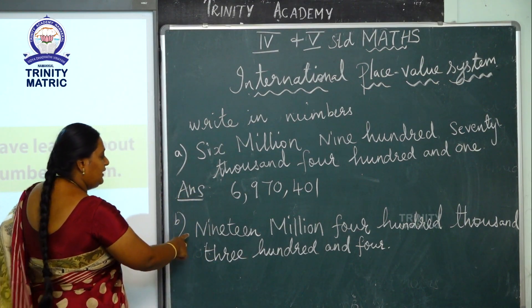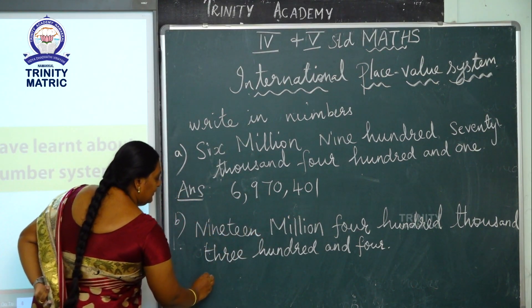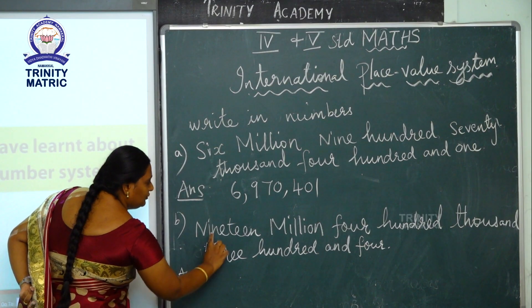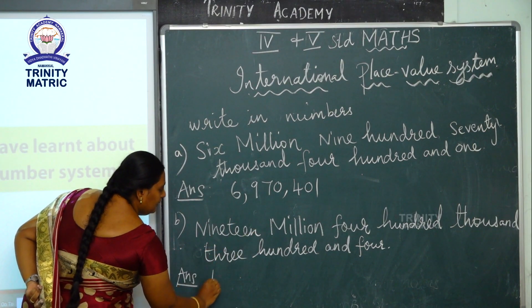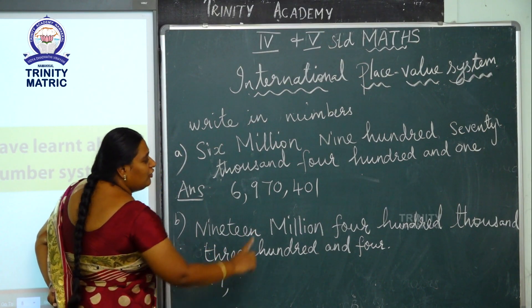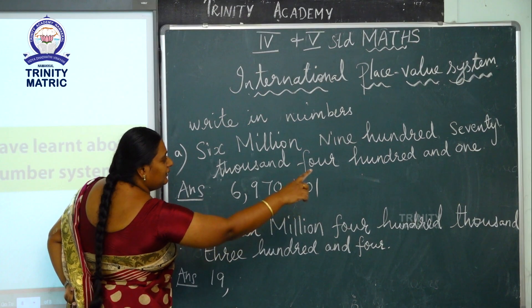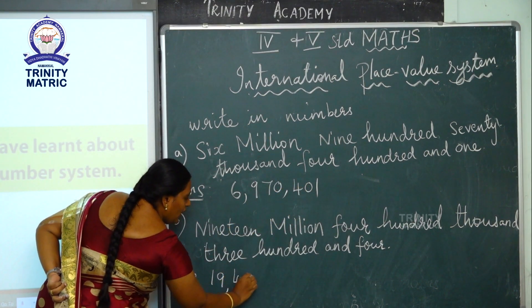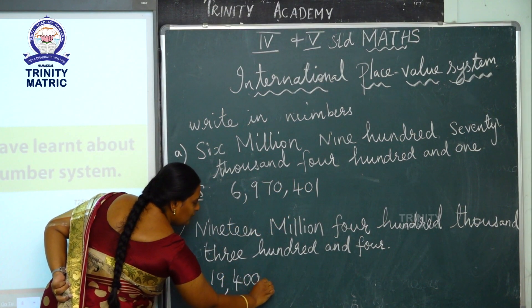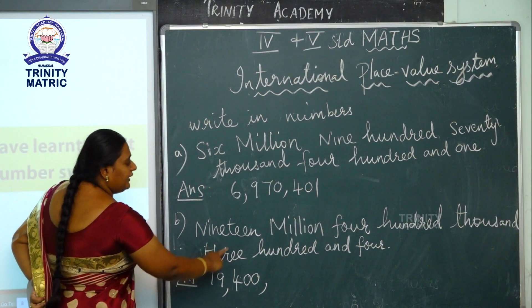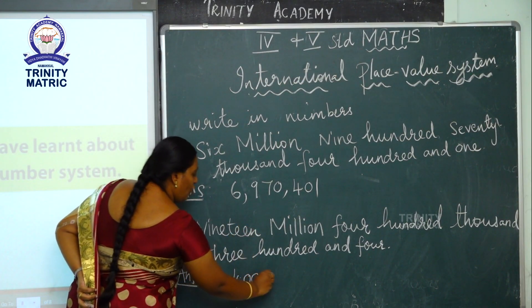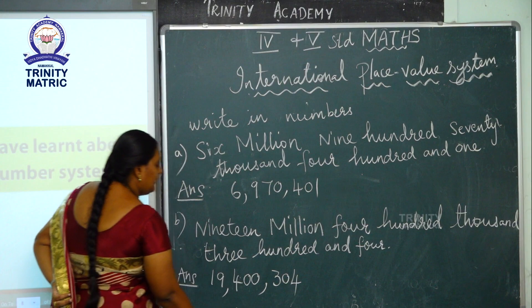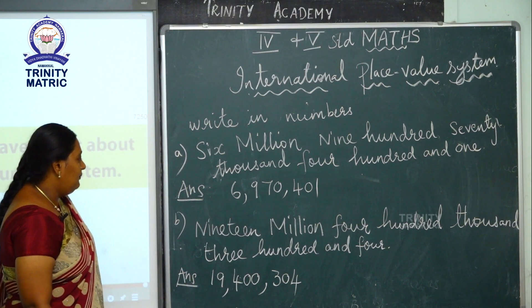Next big question: nineteen million. The answer is 19,000,000 — put comma — 400,000 — put comma — 304. So the number for the given number name is 19,400,304.